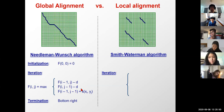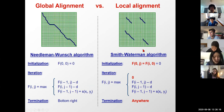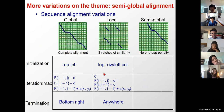So the three things needed: initialize anywhere in the top row or leftmost column; allow termination anywhere; and add a zero option in the update to allow restarting. Global alignment starts at top-left and ends at bottom-right. Local alignment starts anywhere and ends anywhere, with a zero option allowing restart anywhere. Semi-global alignment handles chimeric reads or junk sequence, ensuring at least one sequence is covered all the way to the end.